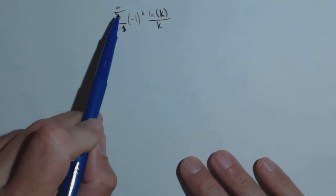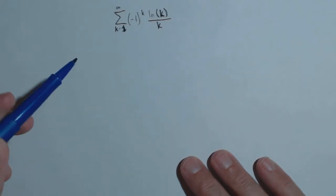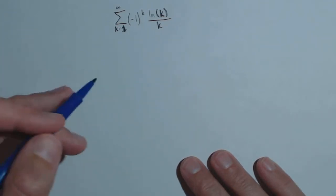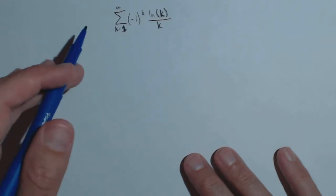So we're looking at the following series, one to infinity of negative one to the k times ln of k over k. We're going to determine first whether or not it's convergent, and then second, is it absolutely convergent or conditionally convergent, assuming it's convergent?